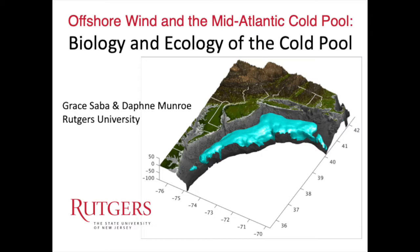I'm going to focus mainly on the seasonal processes of the cold pool that will tie in the physics that Travis and Scott talked about with the biology — the bottom-up impacts of how seasonal processes like stratification influence nutrient input and support the base of the food web. I'll get into how fin fish are driven by cold pool processes, and then Daphne will take over to focus on the shellfish component.